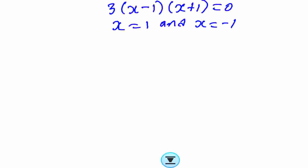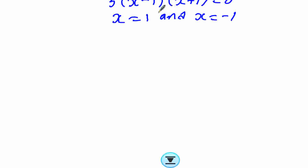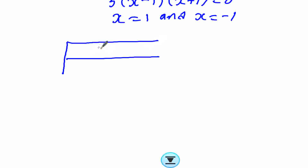Now that we have the values of x, we can use them to find the nature of these turning points. Then after that we shall get the values of y and sketch the curve. To determine the nature of the turning points, we use the table method.